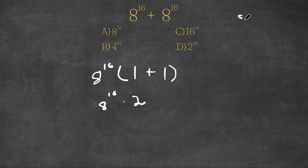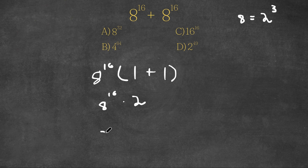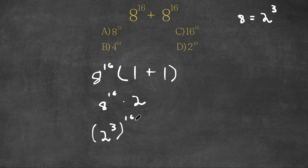Now 8 is equal to 2 to the power of 3. So I'm going to substitute in 2 to the power of 3 for 8. So now we get 2 to the power of 3, to the power of 16, times 2.